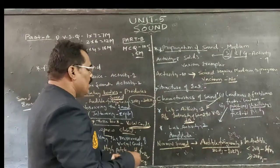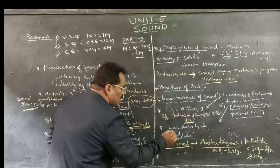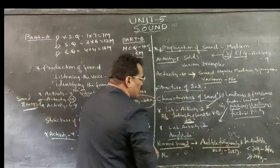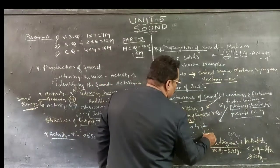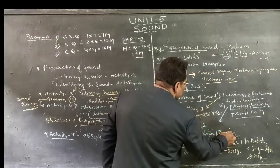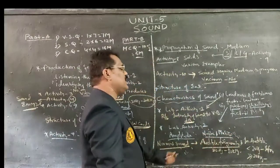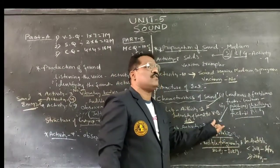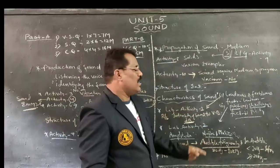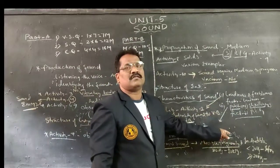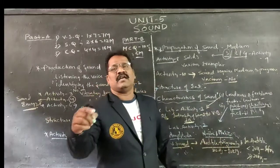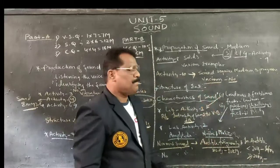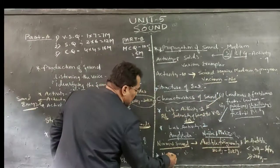The last topic is noise pollution. Within normal audible sound, we have one more topic — noise and music. What is meant by noise, what is meant by music, and differences between noise and music — we have studied clearly. An unpleasant sound gives us noise. A pleasant sound in a rhythmic way with equal sequential decreasing or increasing amplitude gives us a musical note.